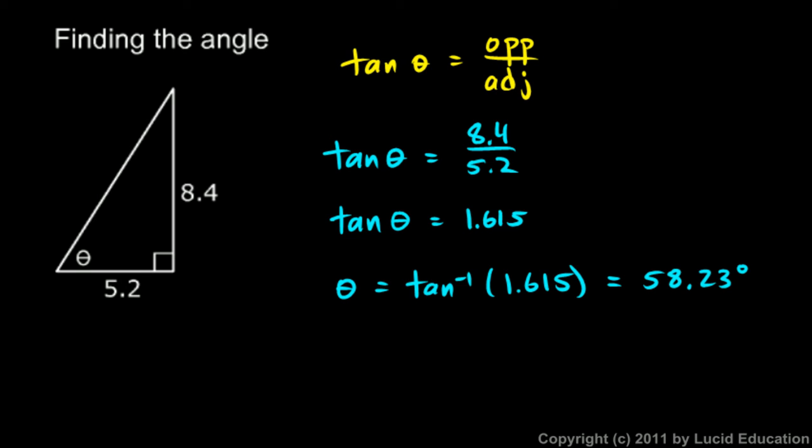Now before we leave this, let me make another important point. Look at this calculation that we did right here: 8.4 divided by 5.2, and we got 1.615. It's better to not do that calculation. We know that the tangent of theta is this, so theta must be the inverse tangent of this. Instead of dividing this and getting 1.615, it would be better to do it like this: theta is the inverse tangent of 8.4 over 5.2.